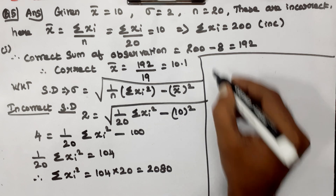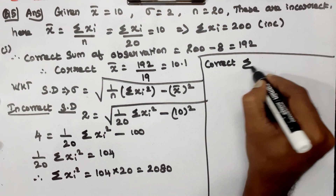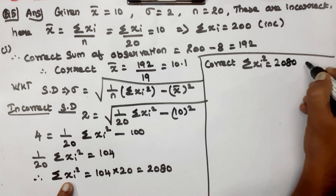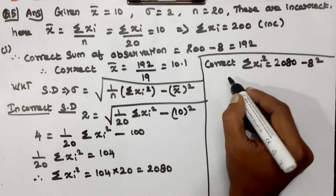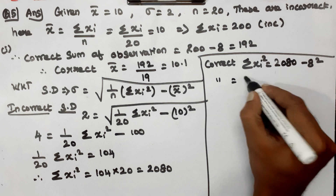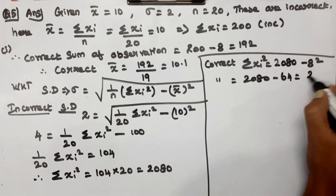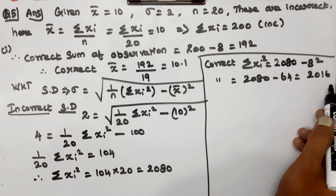Now for the correct summation xi²: correct summation xi² = incorrect summation xi² minus (wrong value)² plus (correct value)². That is 2080 minus 8² = 2080 minus 64 = 2016. So correct summation xi² = 2016.